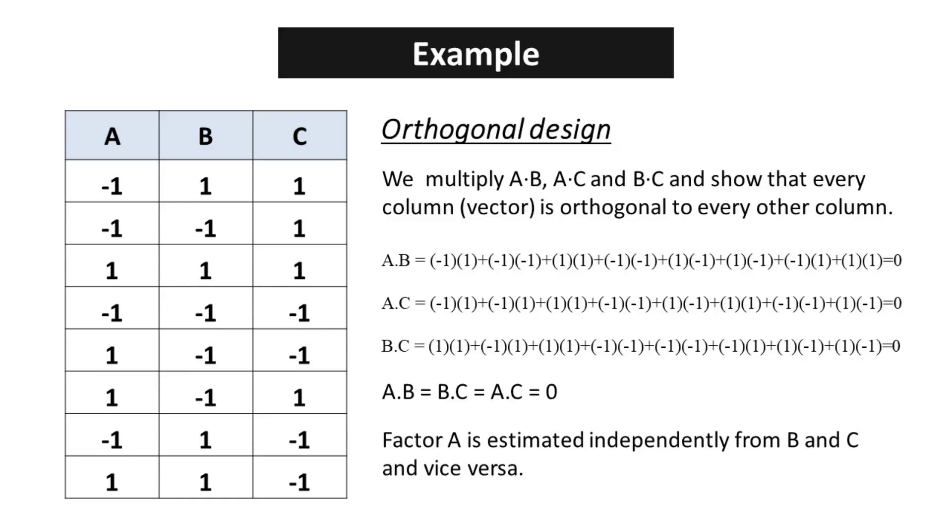Let's take an example. Imagine we have three vectors, A, B, and C. When we multiply A, B, A, C, and B, C, we witness something truly remarkable: every resulting column, or vector, is orthogonal to every other column. This means that the dot products of these vectors result in a value of zero, indicating a perfect perpendicular relationship. Hence, factor A is estimated independently from B and C and vice versa.